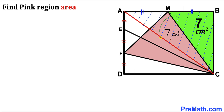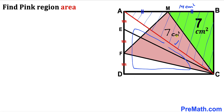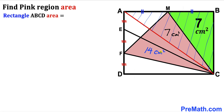The total area of triangle ABC is 7 plus 7 = 14 cm². Since AC is the diagonal of the rectangle, the other half also has area 14 cm². Therefore the total area of rectangle ABCD is 14 plus 14 = 28 cm².